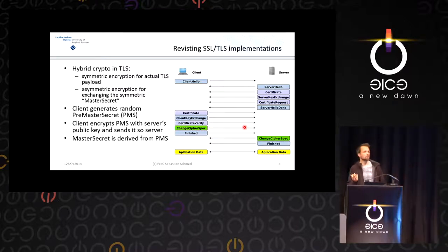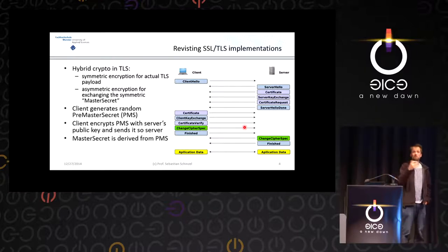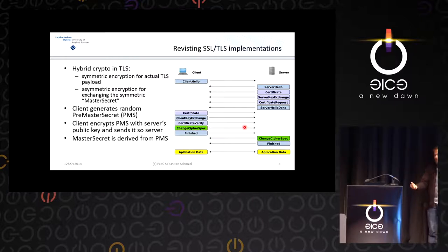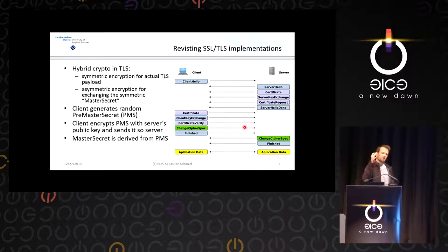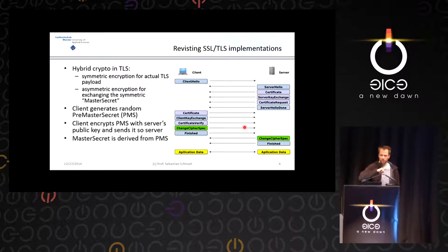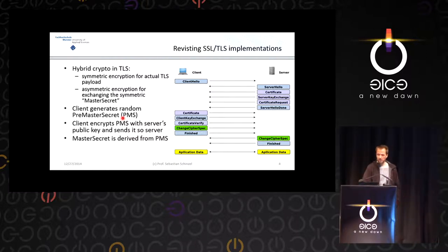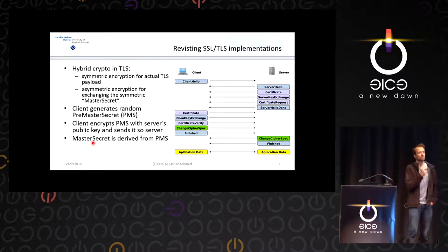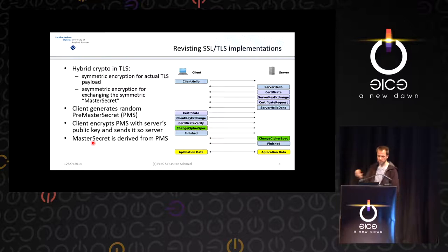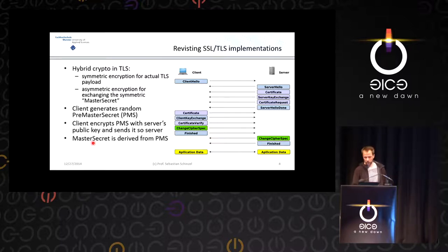When an attacker is able to decipher this session key, the session is broken — the attacker can decrypt the whole session and confidentiality is gone. This session ticket is called the pre-master secret (PMS). The client encrypts it with the server's public key and sends it over. The actual session key — the master secret — depends on the pre-master secret. That's everything you need to understand to follow this talk.